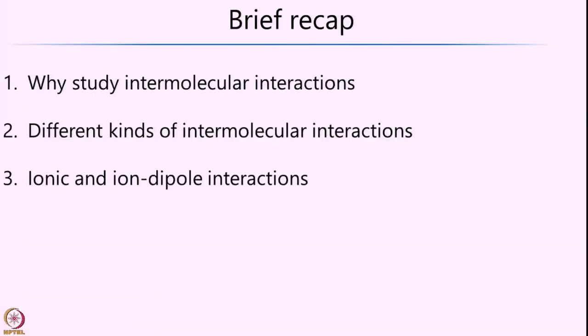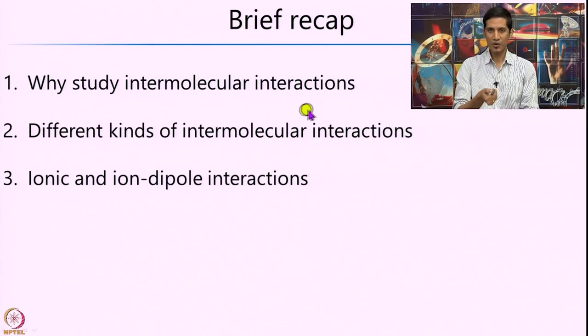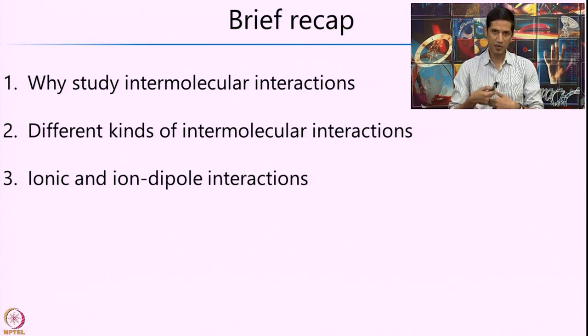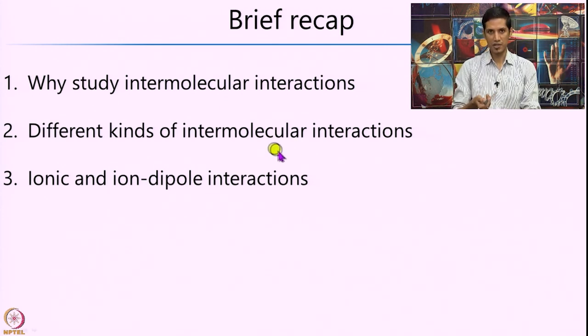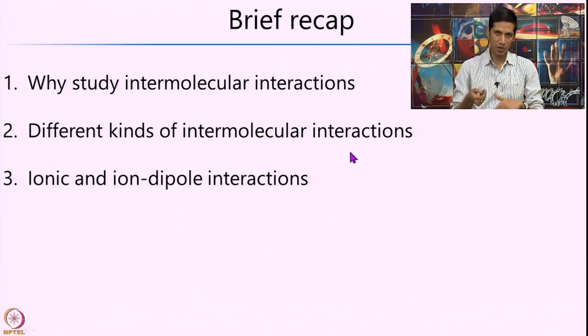Before we jump into the permanent dipole-permanent dipole interaction, let us quickly recap what we learned in the previous class. In the previous lecture, we first looked at why we need intermolecular interactions and what is their role in chemistry, biology, and material science. Then we looked at the different classification of intermolecular interactions based on whether the species is charged or polar and the different subclasses.